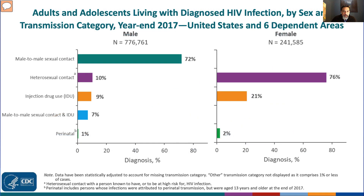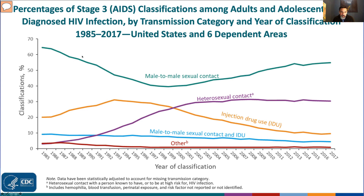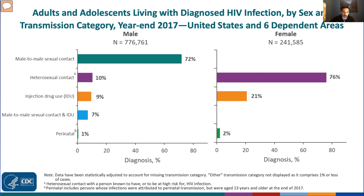It's important to stratify the risk factor distribution by gender, because male to male sexual contact is primarily a risk factor for males. Among men, male to male sexual contact is far and away the most common risk factor. However, for females, it's heterosexual contact, followed by injecting drug use. So the risk factor profile for HIV is different by gender.